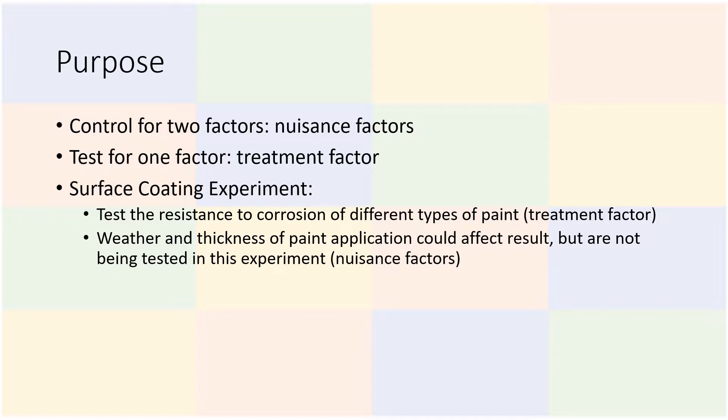An example of an experiment where a Latin square design may be useful would be testing a surface coating, such as paint, for corrosion prevention. Different types of paint would be the treatment factor, but other factors which would affect the rate of corrosion, but which are not being studied, may be the weather and thickness of coating application. These would be the nuisance factors.